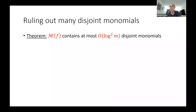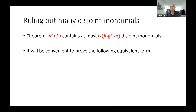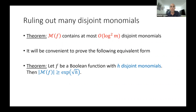First step: any boolean function with m monomials has at most O(log m) pairwise disjoint monomials. The proof uses standard tools from boolean function analysis. Equivalently: if f is a boolean function with h pairwise disjoint monomials, then it has at least exp(√h) monomials in total. So you cannot have many disjoint monomials without being forced to have exponentially more. This is where the interplay between the boolean nature of the function (combinatorial) and the polynomial expression (algebraic) comes in.